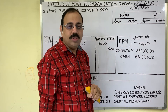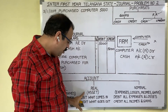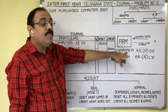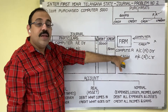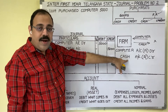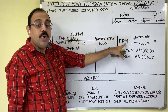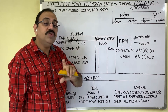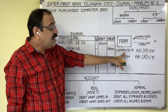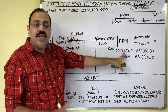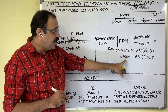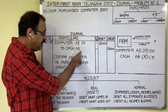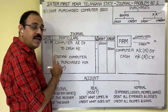Real account rules: debit what comes in, credit what goes out. Computer is coming — debit computer account. Cash is going — credit cash account. Instead of writing the computer word, don't write 'purchases' word. If goods come, instead of goods we should write 'purchases'. But if there is any fixed asset, we need not change the word. The final entry is: computer account Dr to cash account. Narration: being computer is purchased for cash.